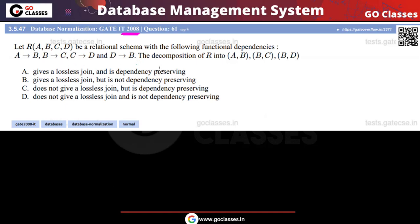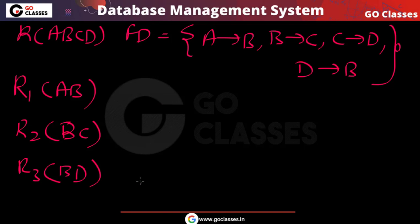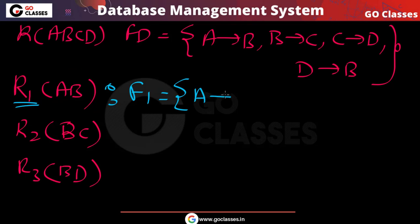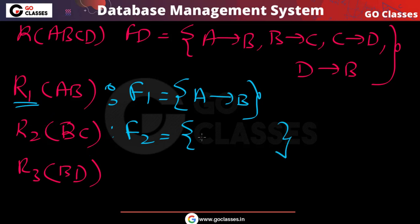The question asks whether this is lossless and dependency preserving. Let's first check for dependency preservation. For R1(AB), the functional dependencies applicable only on these two attributes — F1 — is just A→B, since B cannot determine A. For R2(BC), B→C is applicable, and C can also determine B.